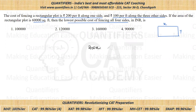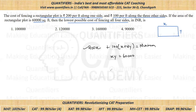The remaining three sides are X plus 2Y, at a cost of 100 per feet — so 100 into (X plus 2Y). This gives us a total cost of 300X plus 200Y. Taking 100 as common, we get 100 times (3X plus 2Y).